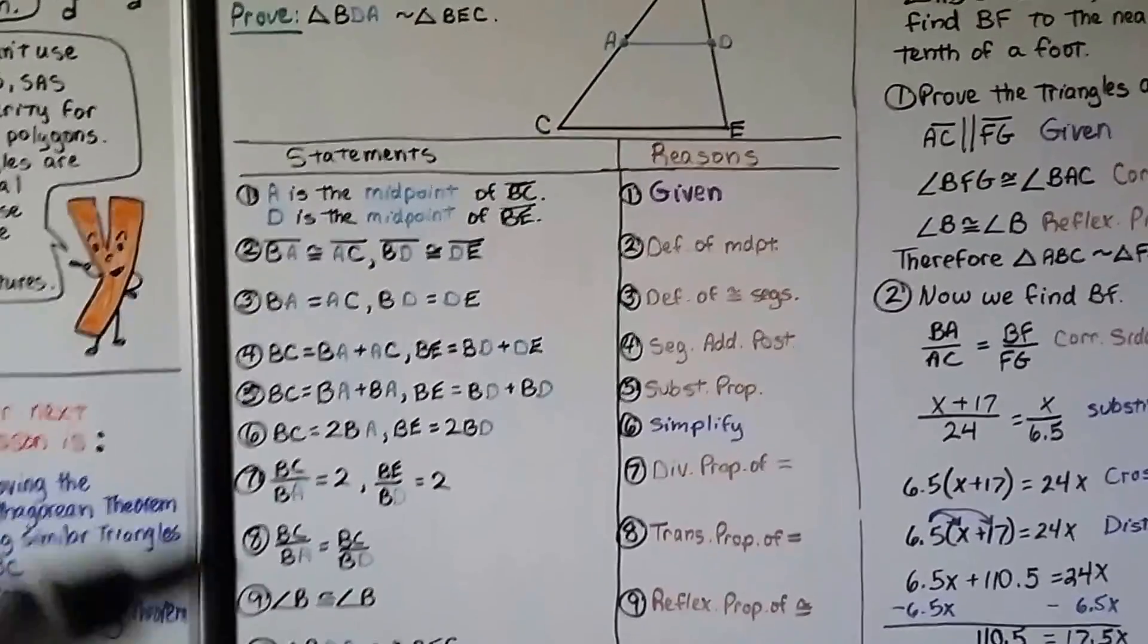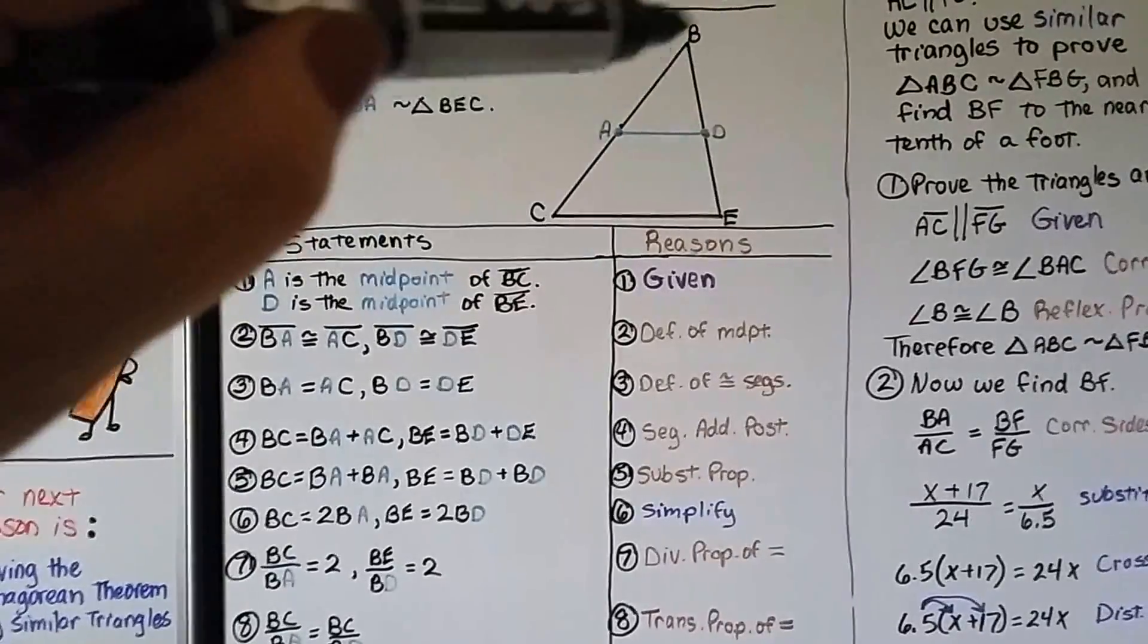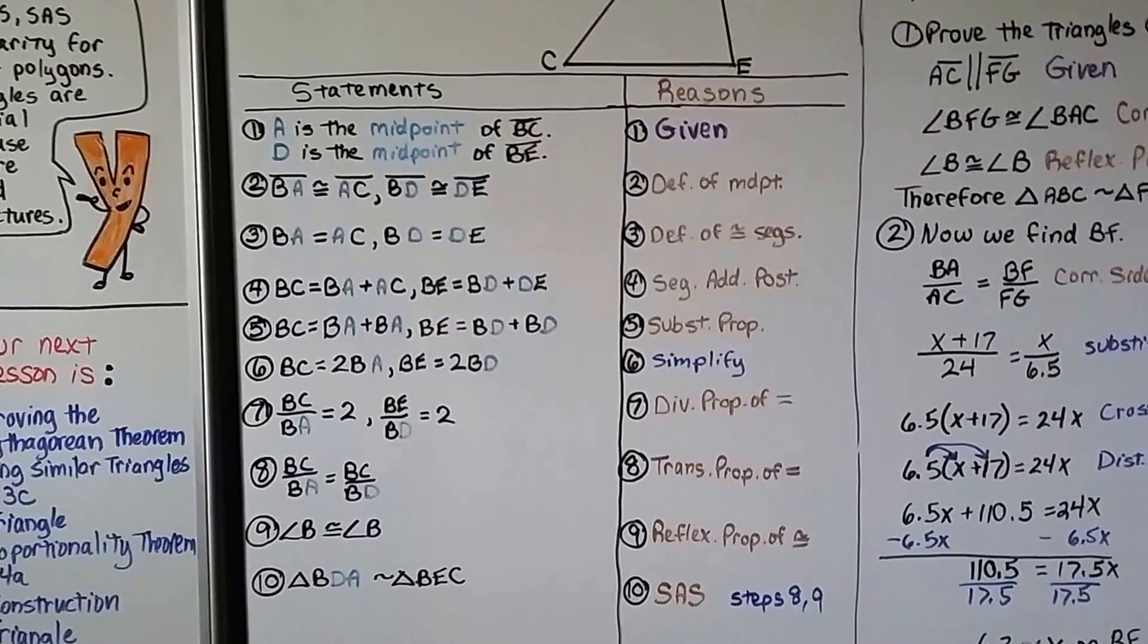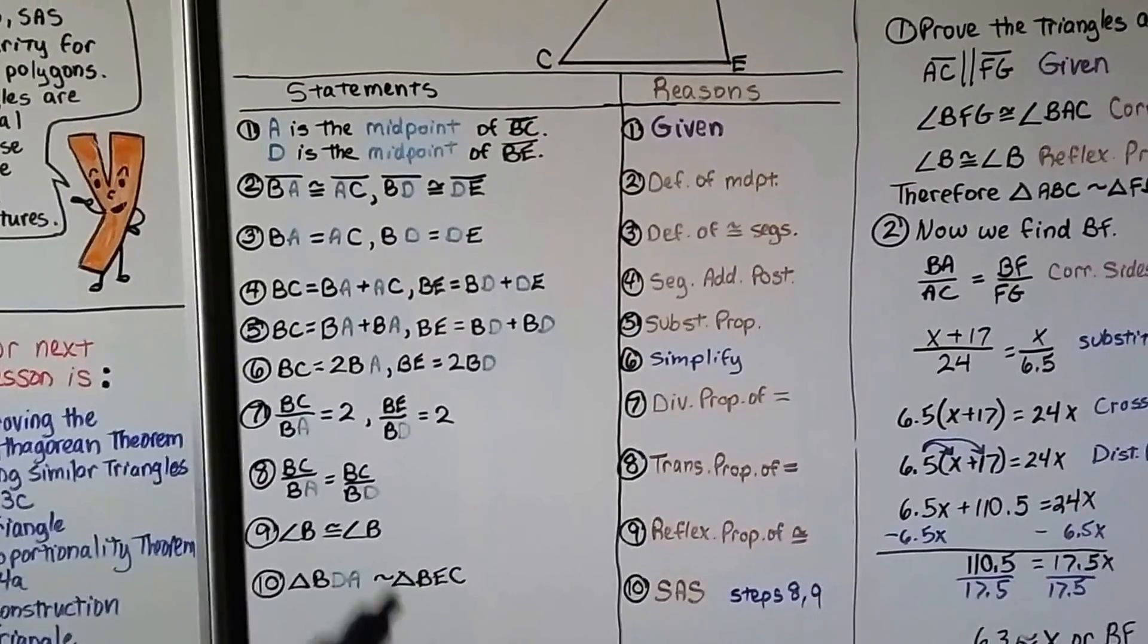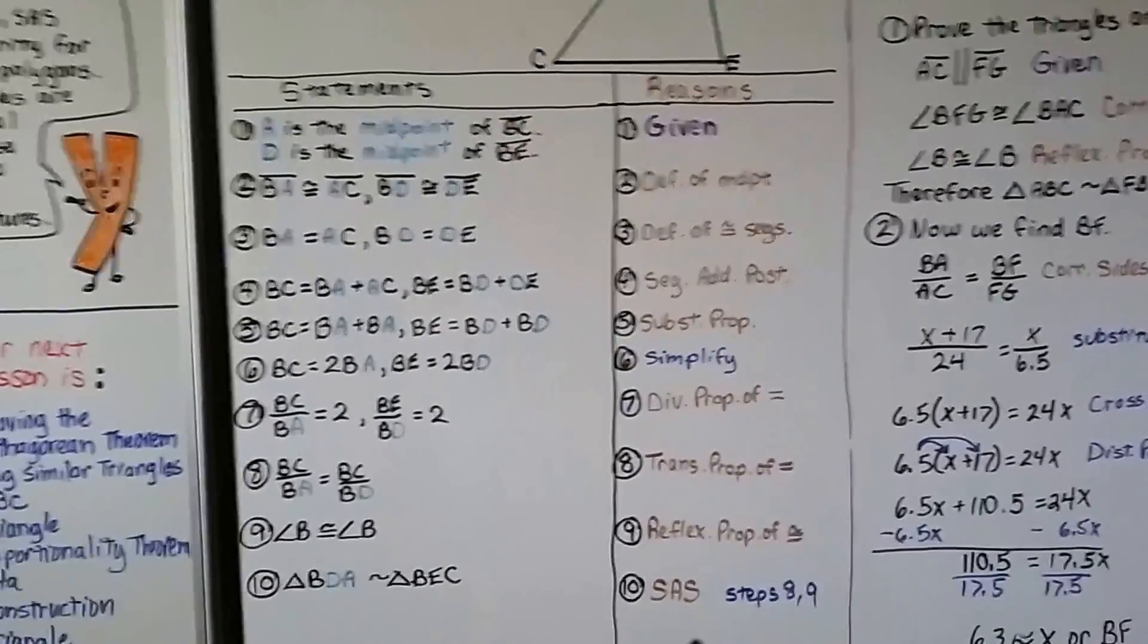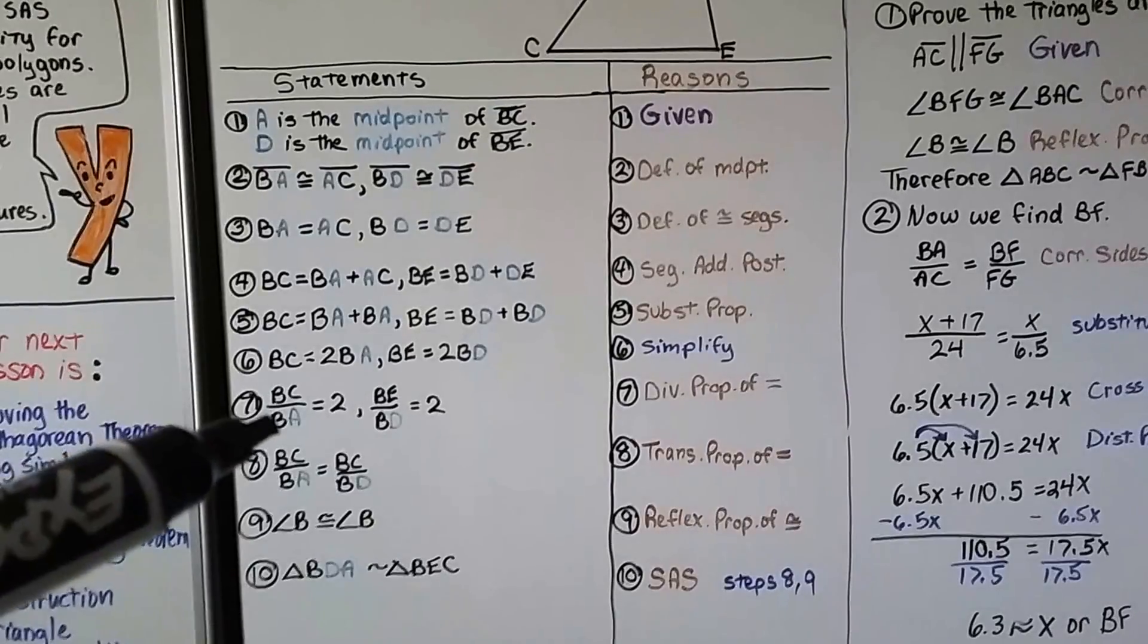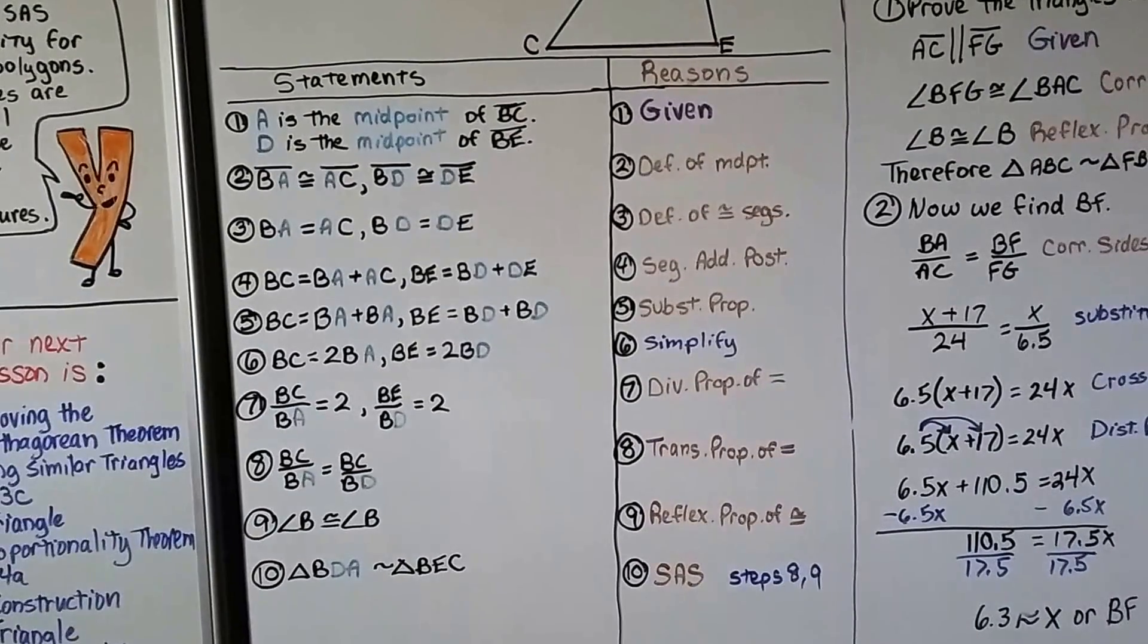And angle B is congruent to angle B. The angle B for this little triangle is congruent to angle B for the bigger triangle. That's the reflexive property of congruence, which brings us to number 10, that triangle BDA is similar to triangle BEC because of SAS from steps eight and nine. We have a side, an angle, and a side.